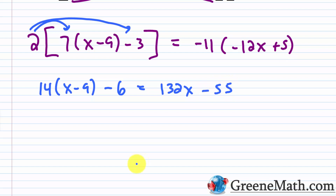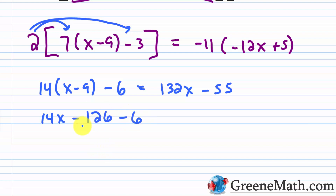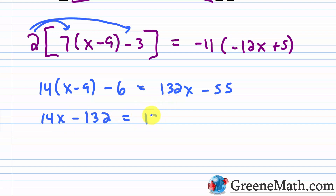Expanding the left side: 14x minus 14 times 9 is 126, minus another 6 — so -126 - 6 is -132. That gives 14x - 132. The right side is 132x - 55.